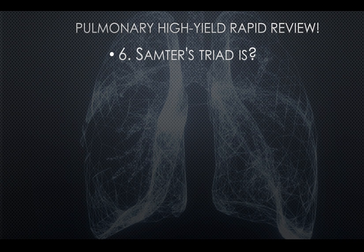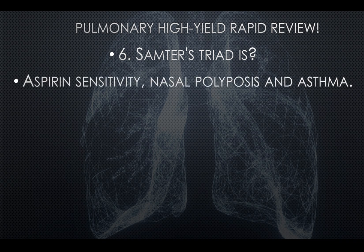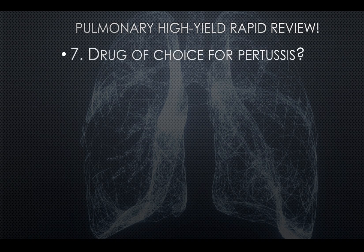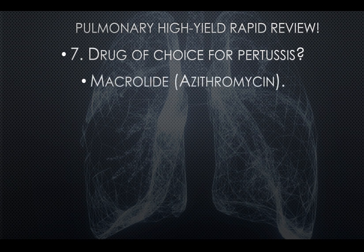Question five: What is Samter's triad? Samter's triad is aspirin sensitivity, nasal polyposis, and asthma. They may ask which three findings make up Samter's triad, or list the three and ask which triad it is — the answer is Samter's. Question six: What is the drug of choice for pertussis? The drug of choice is a macrolide, likely azithromycin.